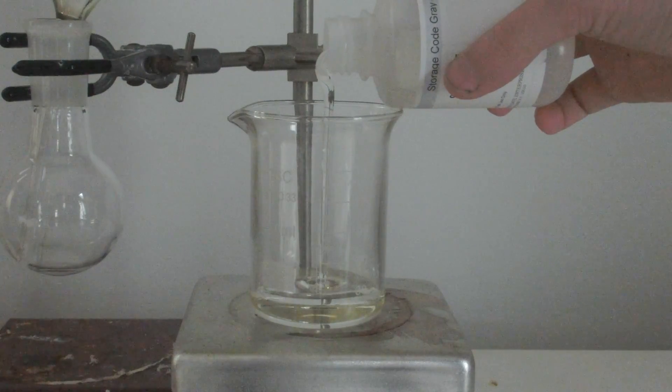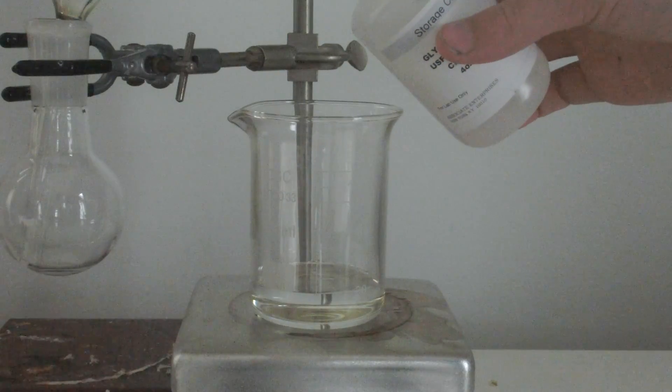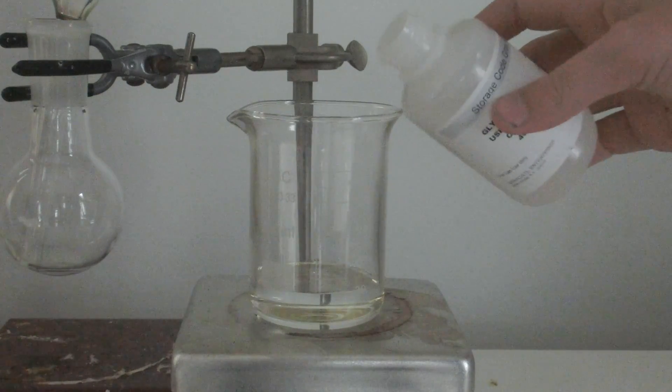First, measure out 30 milliliters of glycerin into a beaker on a hot plate. Then turn on the hot plate to high heat to drive off all of the water.